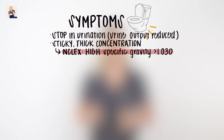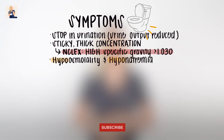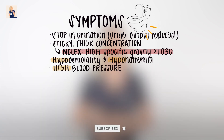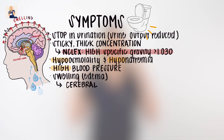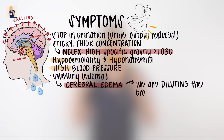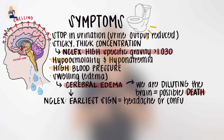If we are retaining fluids, we are diluting our insides. We are soaked inside, which means common labs would show hypoosmolality and hyponatremia. We would also see severely high blood pressure and edema. Our last major symptoms are swelling in the brain and seizures due to cerebral edema. SIADH dilutes the body, meaning we are diluting the brain, and that can result in death. NCLEX tip: the first signs of this occurring are complaints of headaches or confusion.